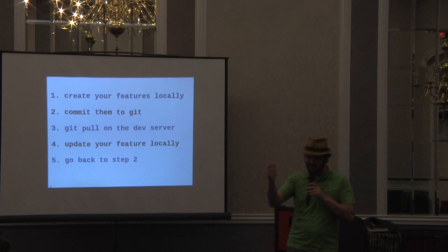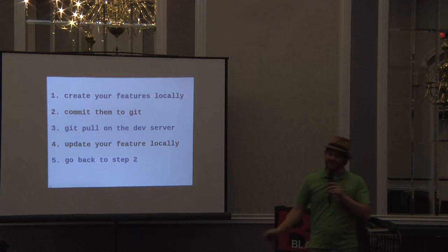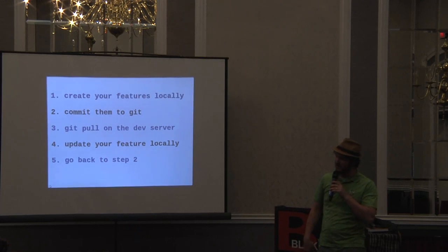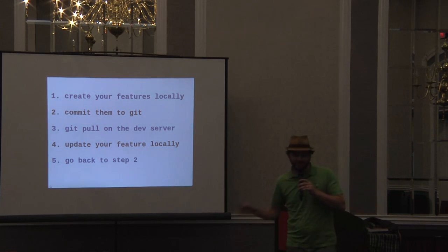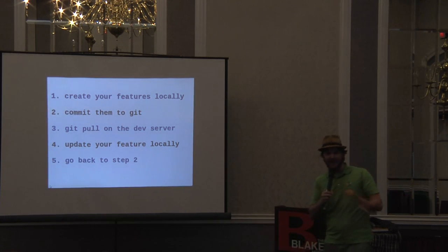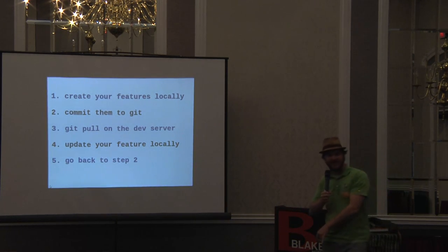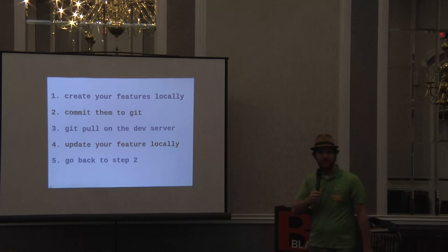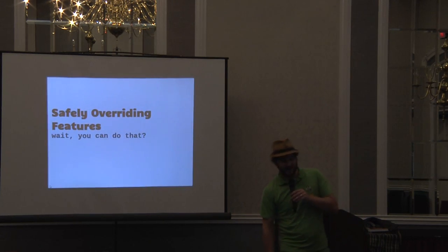The workflow is simple: create features locally, commit to Git, pull to dev or staging, clients request changes, come back to local, make changes, run Drush FU to write to code, commit and push — it's a big circle of pushing code up the system and pulling database changes down. If you want to know more about that, Zach after lunch will be talking about Aegir and continuous integration, which is a decent part of this workflow.